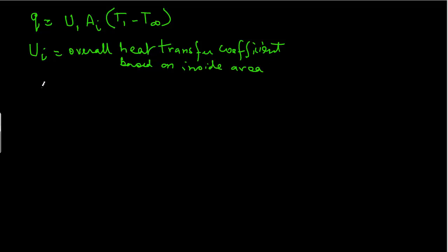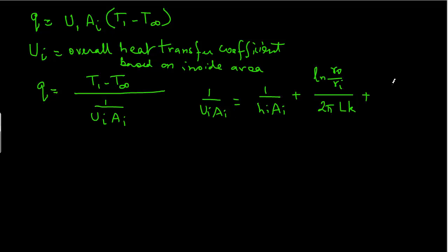So we can rearrange our equation as Q equals Ti minus T infinity divided by 1 over Ui Ai. Where just by comparison of this equation and the previous one, we have 1 over Ui Ai equals 1 over Hi Ai plus natural log of Ro over Ri divided by 2π LK plus 1 over Ho Ao. So this equation here can be used to determine Ui if we know all the other terms that are there in this equation.